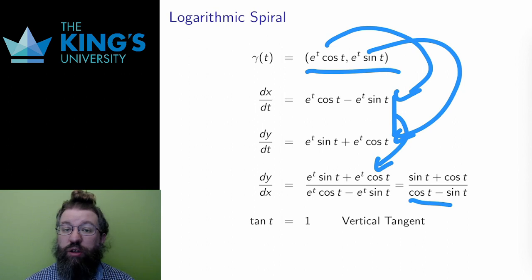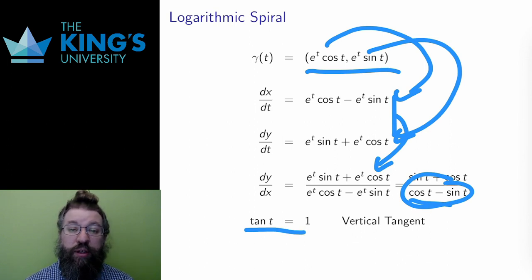The denominator is 0 when cos t minus sin t is 0, which with a little bit of trig is the same as when tan t equals 1. There are infinitely many such points, which matches the graph where I expected many, many vertical tangents.